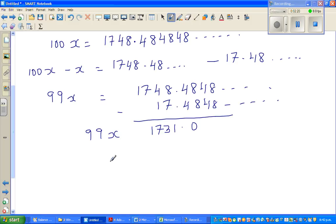So I can divide both sides by 99. If you divide this side by 99, you have to divide this side by 99. I forgot the equal sign. This is equal. So this is X is equal to 1731 divided by 99.